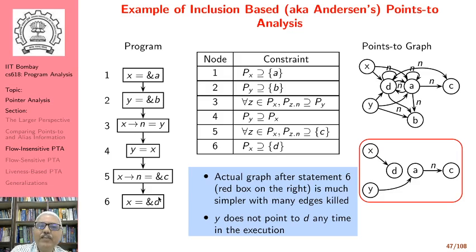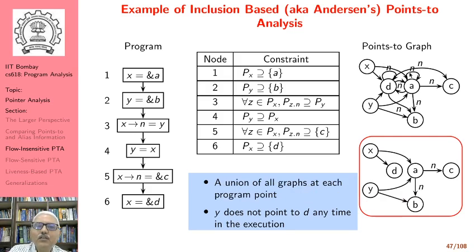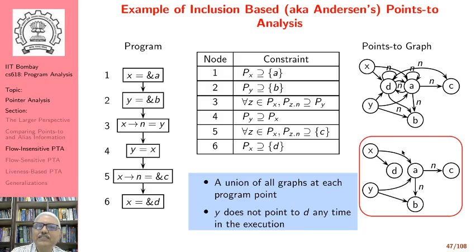Anderson's points-to analysis is a gross over-approximation of the information that a flow-sensitive analysis would otherwise compute. Before you feel this is not very useful, wait until we see what Steensgaard's algorithm does. This graph is a union of all graphs at each program point. We do not have D pointing to C, we do not have a self-loop over D, we do not have D pointing to A or A pointing to D, we do not have a self-loop over N, and we do not have D pointing to N. All these are spurious points-to relations that can never occur anyway.